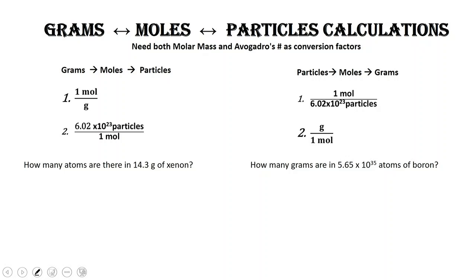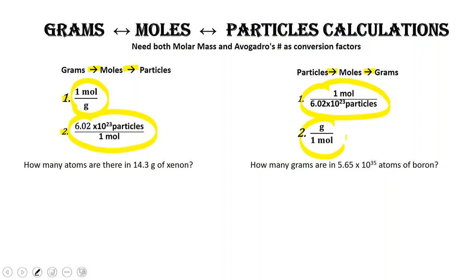Notice that we have two arrows here: from grams to moles and from moles to particles. To get from grams to moles, we have to use our molar mass, and one mole over the number of grams should be on top. To get from moles to particles, we use Avogadro's number such that the number of particles is on top and moles on the bottom. If going in reverse—from particles to moles—one mole goes on top and particles on the bottom. To convert from moles to grams, grams go on top and moles on the bottom.